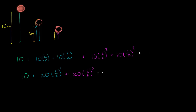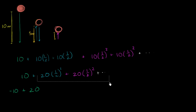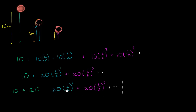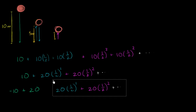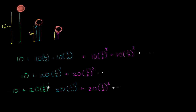We could write 10 as negative 10 plus 20, and then we have plus all of this stuff right over here. So now it very clearly looks like an infinite geometric series, with 20 times one half to the 0 power plus 20 times one half to the first power, and so on.